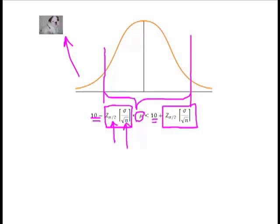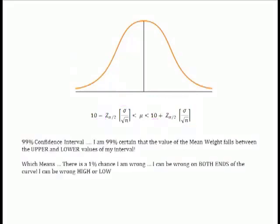Let me walk you through what we're talking about in that part of our formula. Let's talk first about a 99% confidence interval. When I deal with a 99% confidence interval, I'm simply going to take my sample mean and give myself a range. At the 99% confidence interval, I am 99% certain that the mean or mu of the weight of all the dogs in the world falls between this upper and this lower value of my interval.